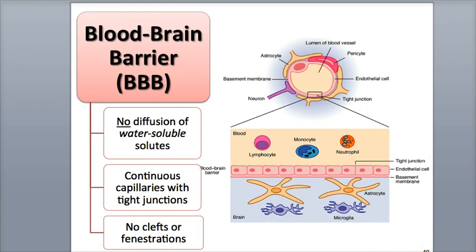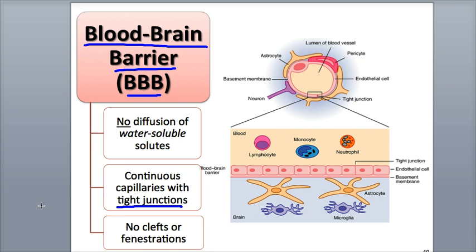The brain contains capillaries that are just the opposite of sinusoids, preventing most chemicals from being exchanged through their walls. These capillaries form what is called the blood-brain barrier, also known as the BBB, and consist of continuous capillaries that have tight junctions that form seals between the endothelial cells. Only a few areas of the brain have regular capillary exchange, such as the pituitary gland, pineal gland, and the hypothalamus.